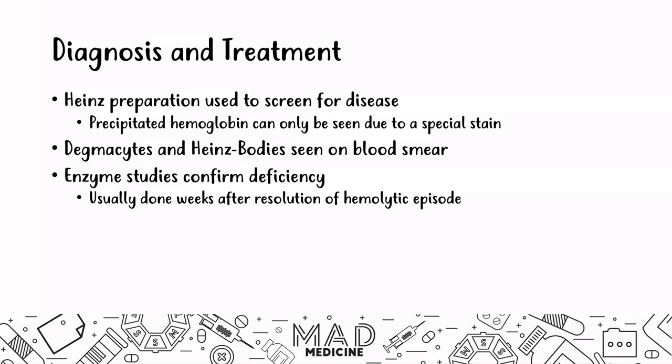Treatment is straightforward. These patients don't have hemolysis occurring out of nowhere — it happens because they're exposed to oxidative stress. The main approach is to make sure they avoid the triggers: stop eating fava beans, avoid drugs that are inducing the hemolysis, and treat any underlying infection to prevent further red blood cell lysis and anemia.